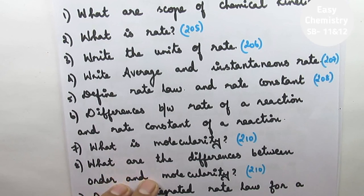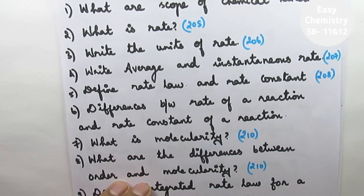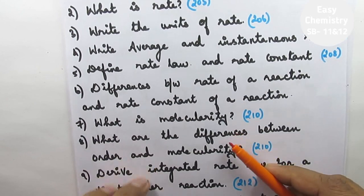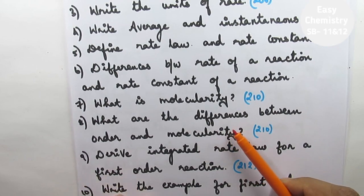Question number 6, differences between rate of reaction and rate constant of a reaction. Question number 7, what is molecularity? Question number 8, what are the differences between order and molecularity? This is very important.